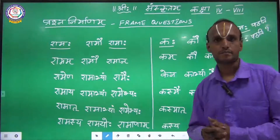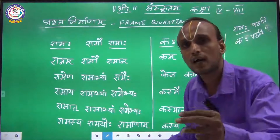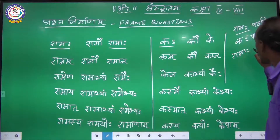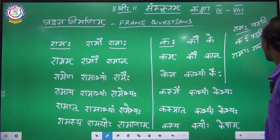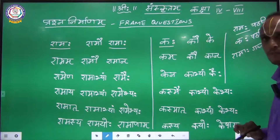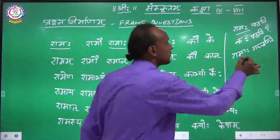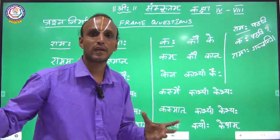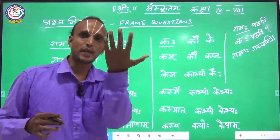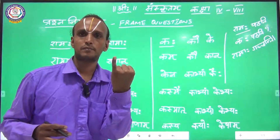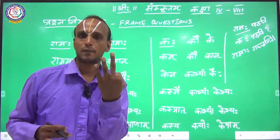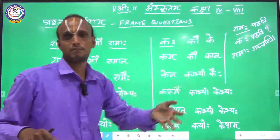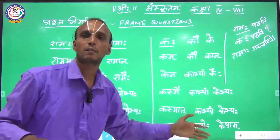See here: Ramaha Gachanti. Ramaha Gachanti means 'Ramas are going.' You can take this as an example — Parashurama, Balarama, Shrirama. How many Ramas are there? Three Ramas, right? So we are saying: Ramaha Gachanti — Parashurama, Shrirama, Balarama — are going.